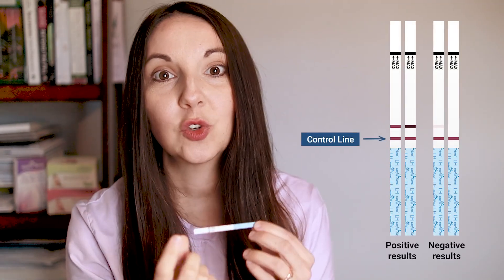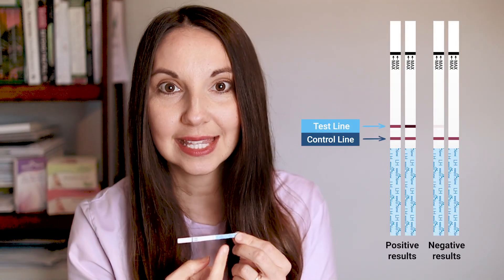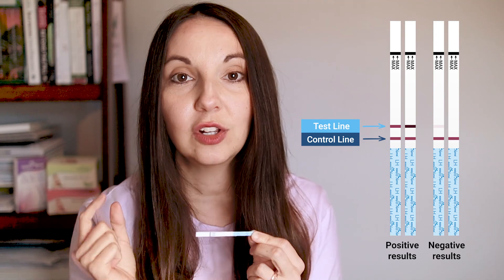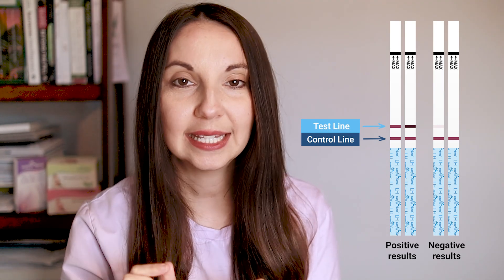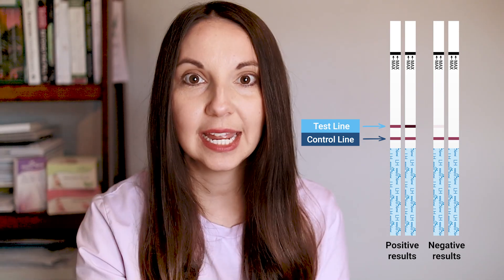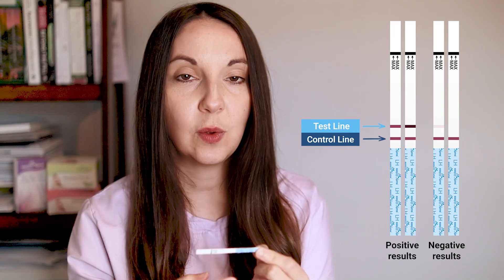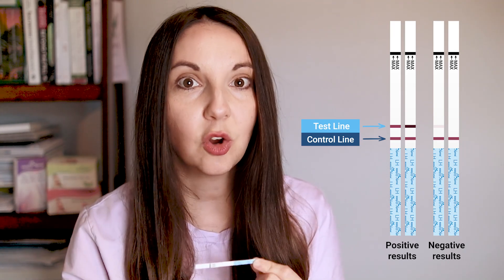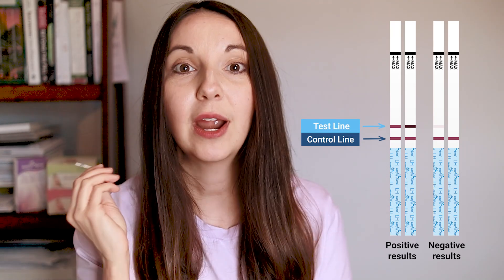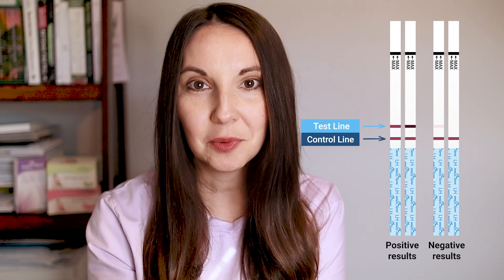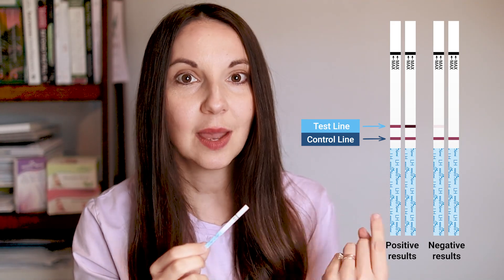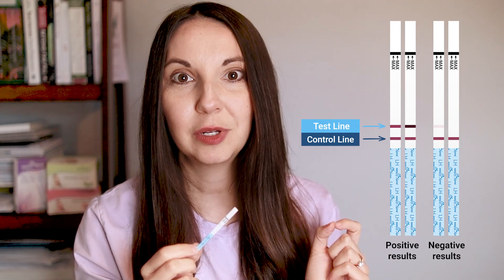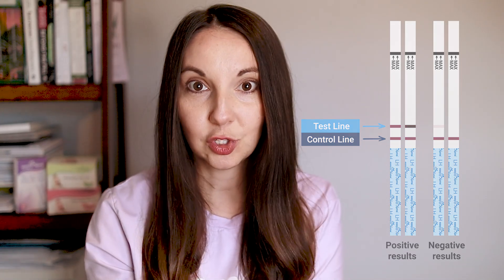Let's review. How do you read your ovulation test strip? You're going to look at the two lines — one is going to be the control line, and the other is the test line. The test line is looking at your luteinizing hormone in your urine at that current moment and comparing it to the control line. We want that test line to be as dark or darker than the control line for a positive result — that's a good sign that ovulation is approaching.